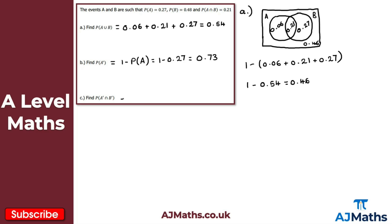Finally for part C, we find the probability of A complement intersection B complement — not A and not B. The only value representing this is the outside region, which is 0.46. That gives us the solution to question 2 and brings us to the end of this introduction to Venn diagrams. In the next video we'll look at mutually exclusive and independent events.